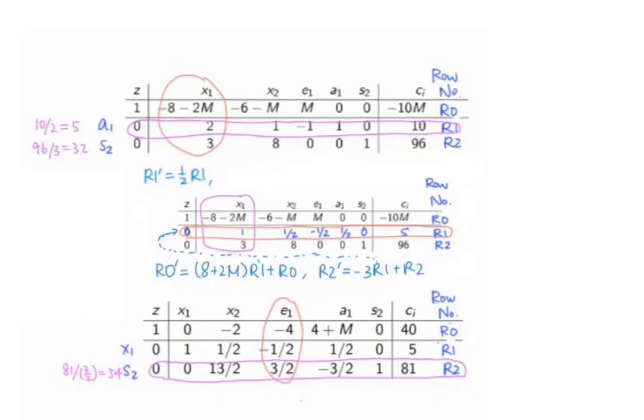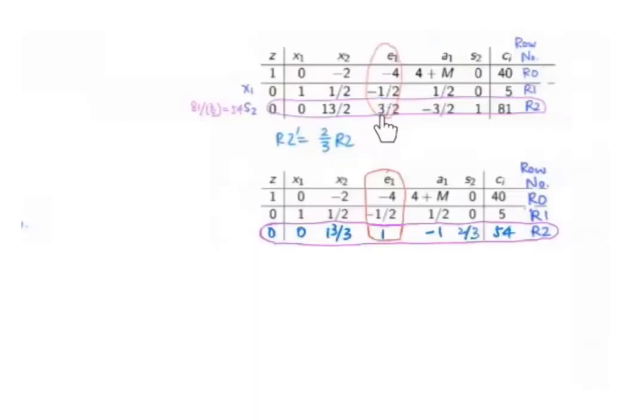The column containing e1 is now the key column and the key row is row 2. We first make this 3 over 2 to be 1 by multiplying row 2 by 2 over 3 to get the new row 2 as follows.